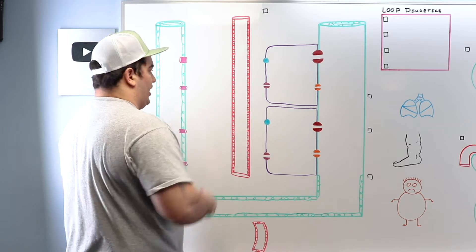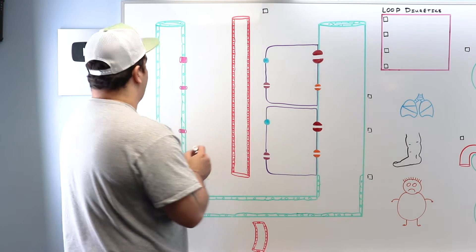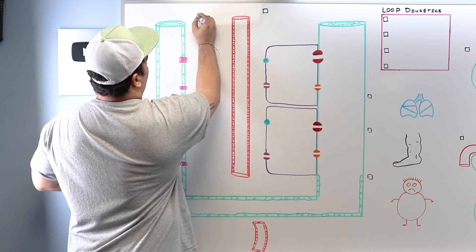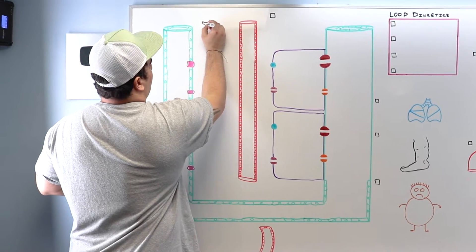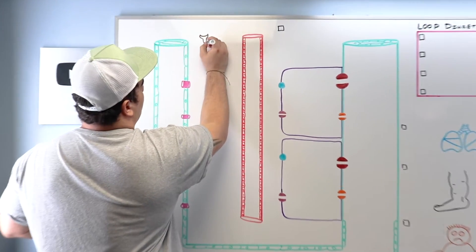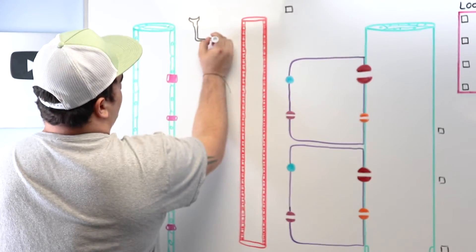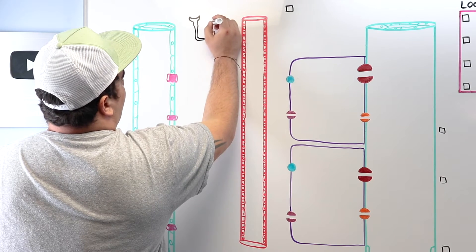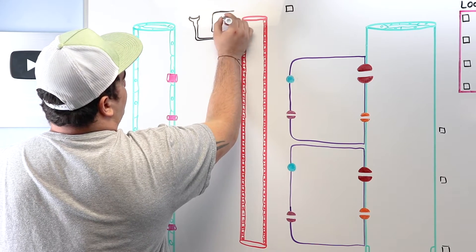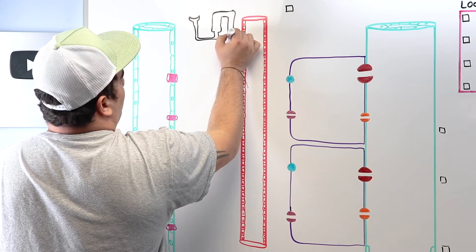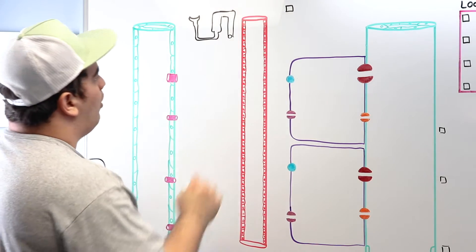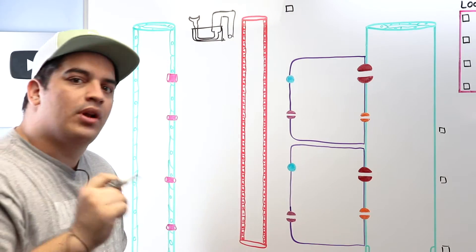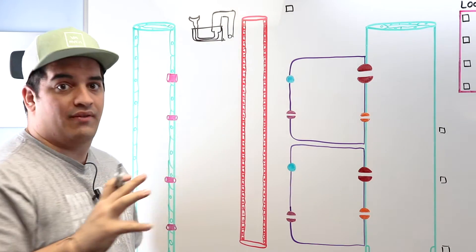We're going to talk about a particular part of the kidneys. If I imagine a little diagram here: there's my Bowman's capsule, my proximal convoluted tubule, there's the descending limb, our hairpin turn, we go up and focus on the ascending limb, then the distal convoluted tubule, and then we go to the collecting duct. What we're focusing on right now is the loop of Henle, and we're zooming in on that.